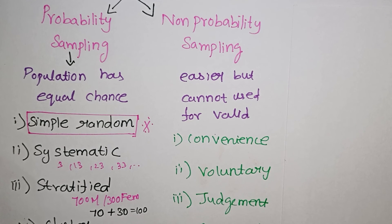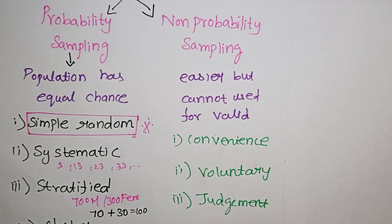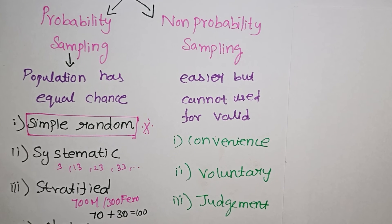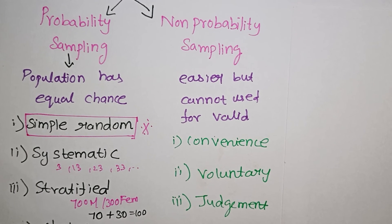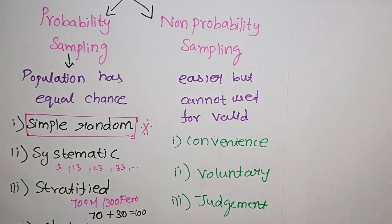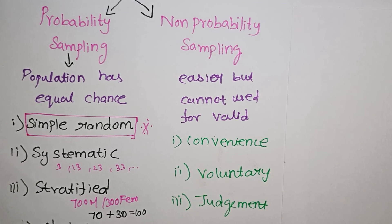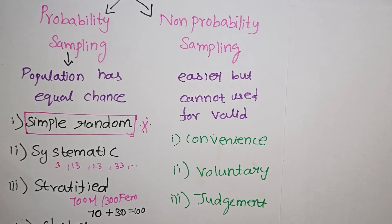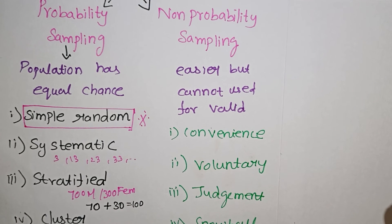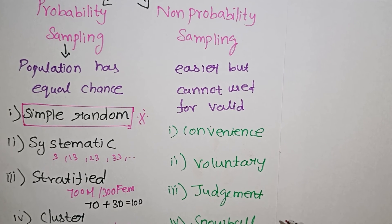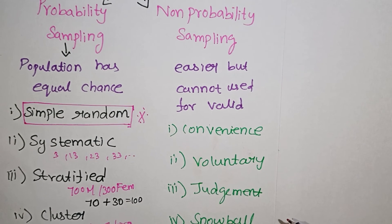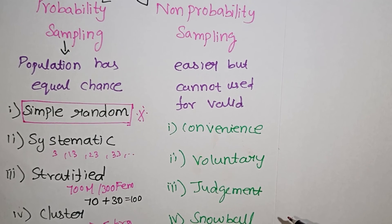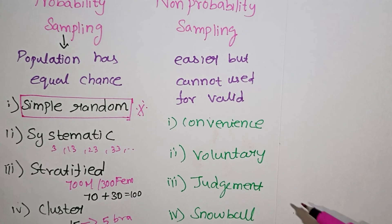Judgment sampling is when the researcher uses their own judgment to select participants they believe are most appropriate for the study.